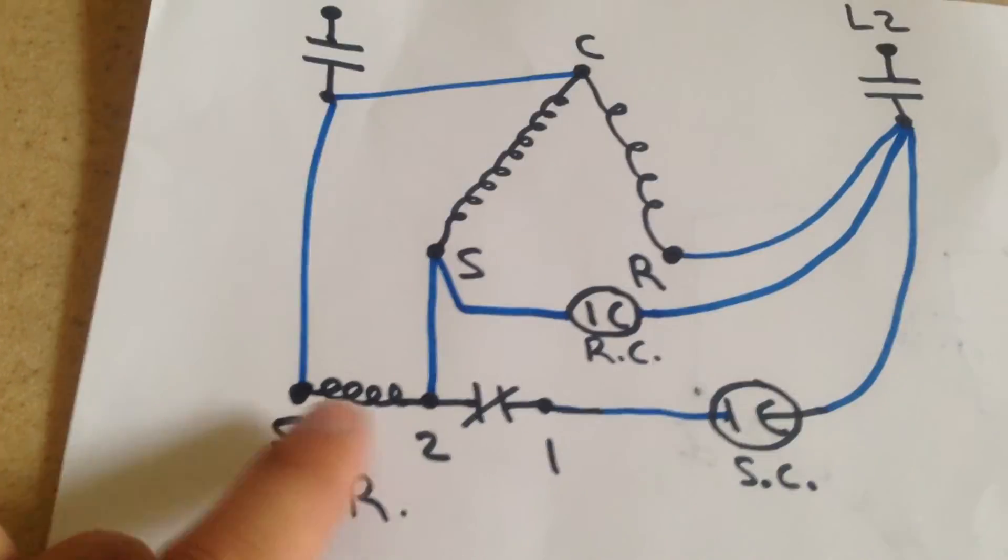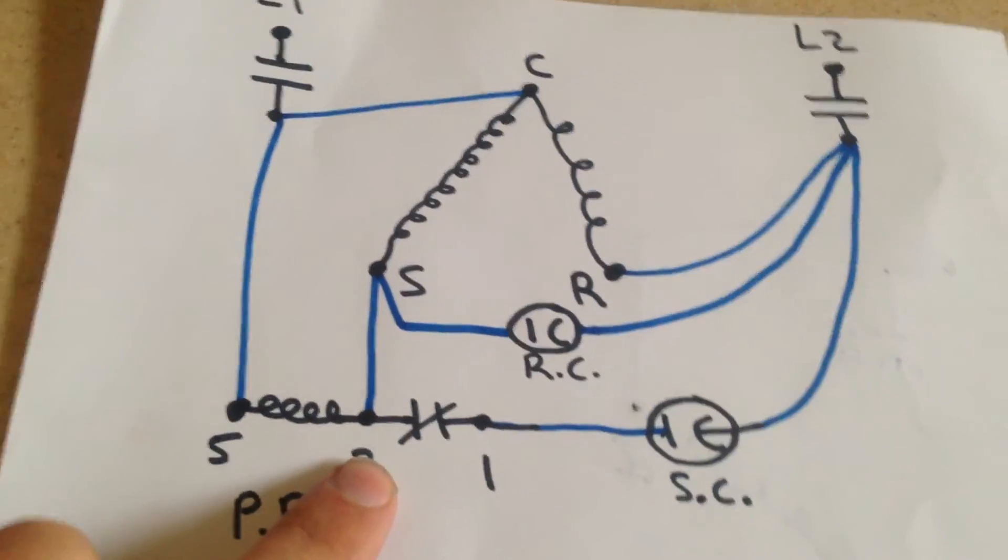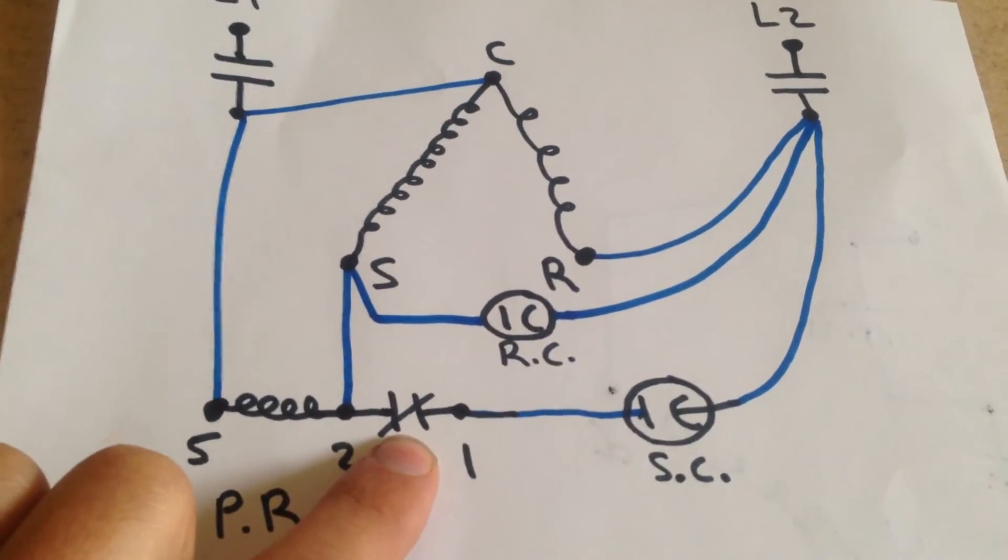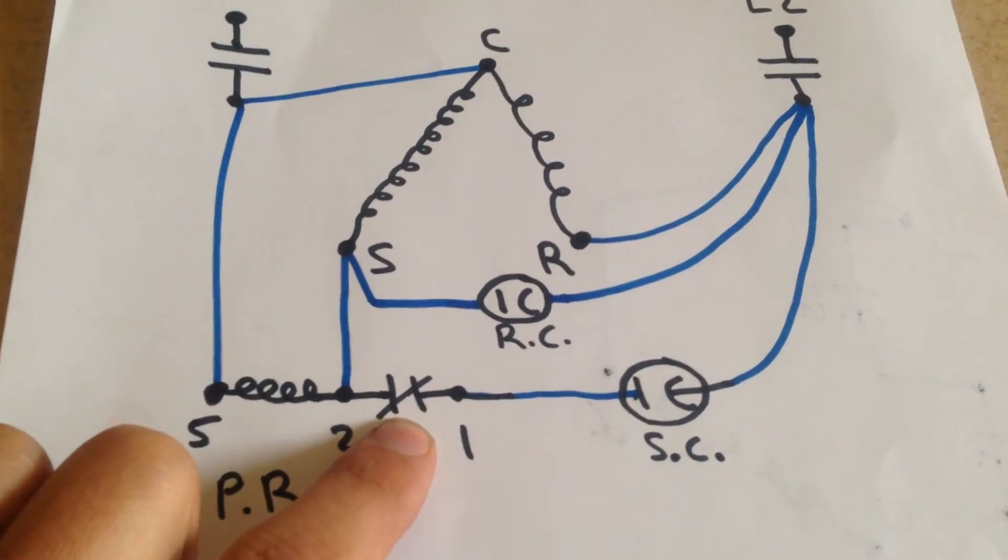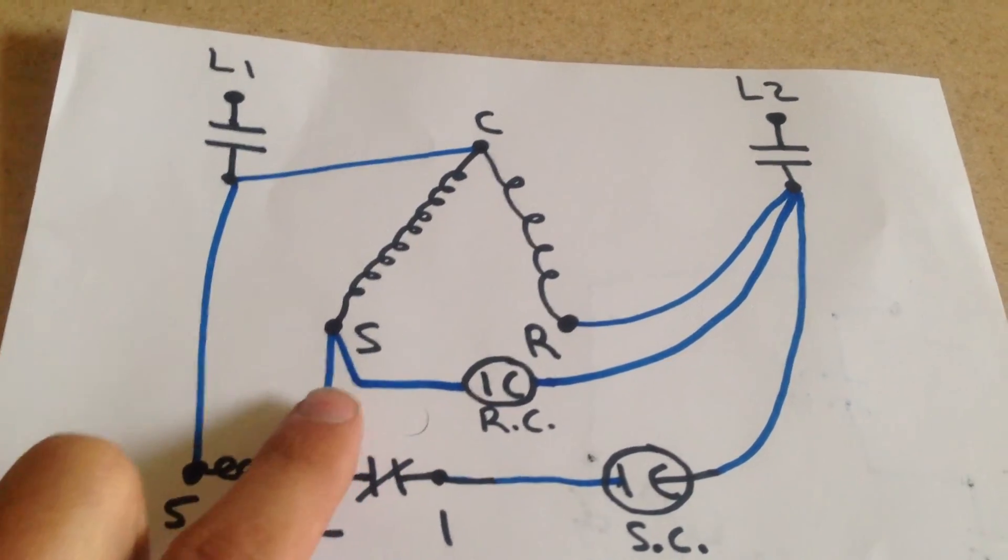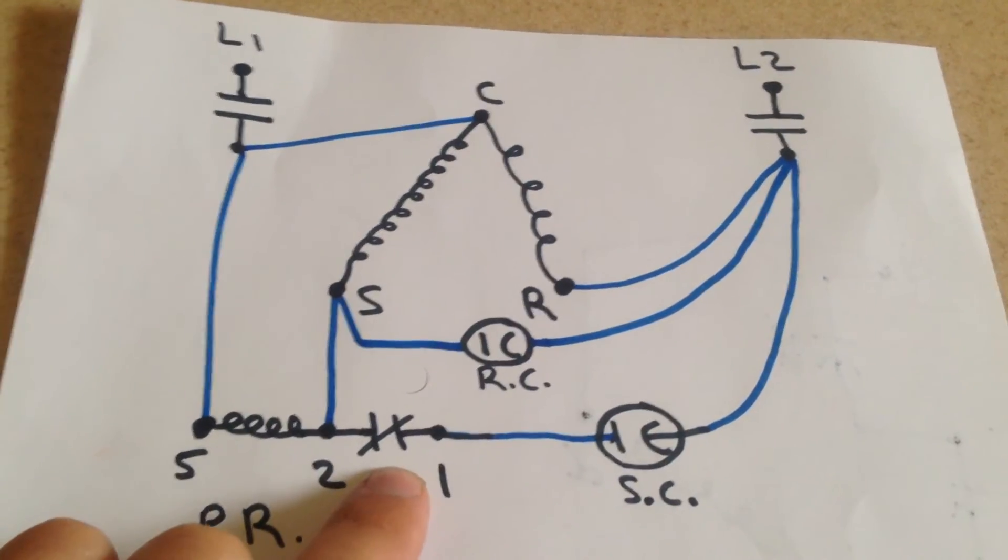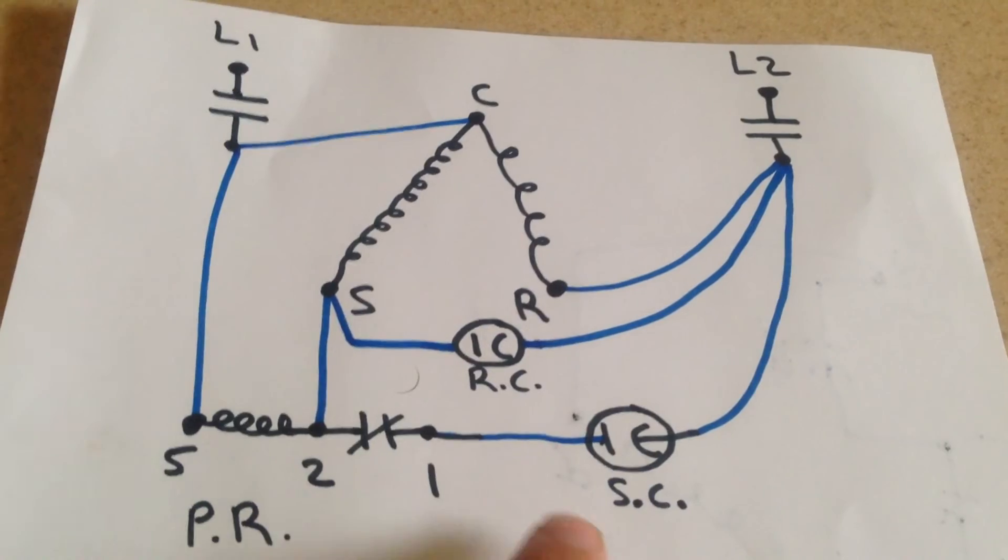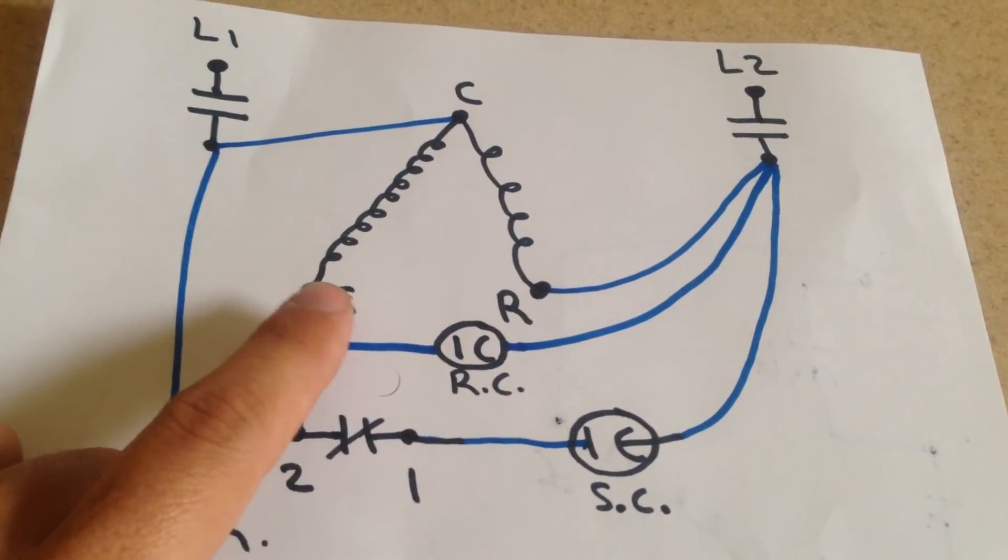So that's going to cause our coil to have enough magnetism to move our contact and change it from being closed to open once this compressor comes up to nearly full speed. So it's going to initially allow the start capacitor to help out starting the motor.